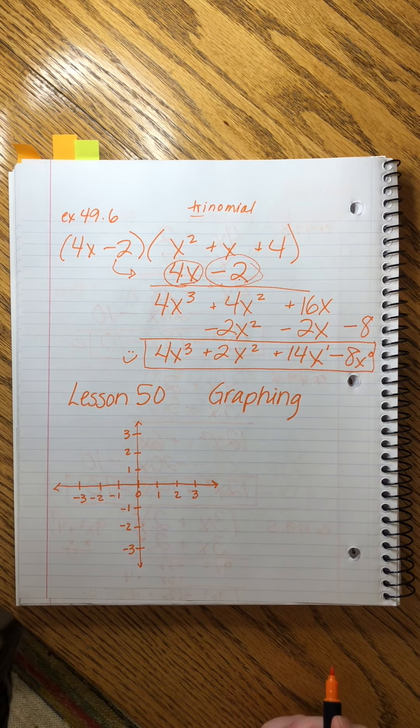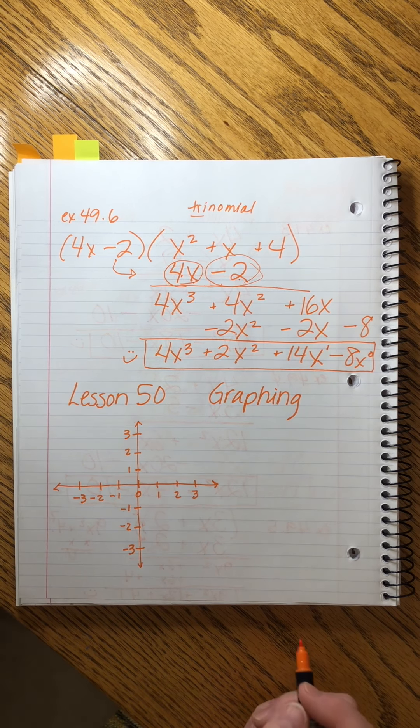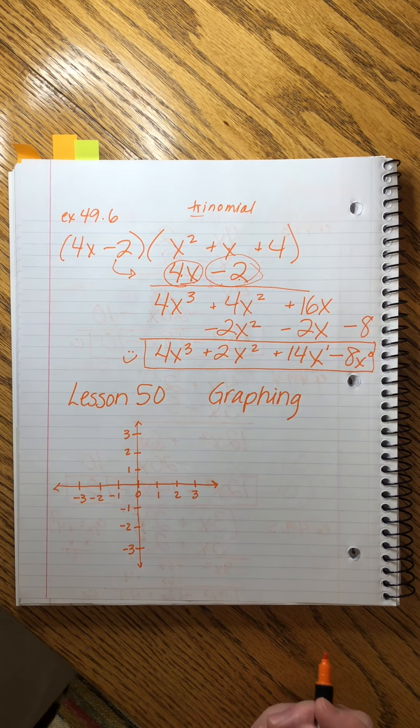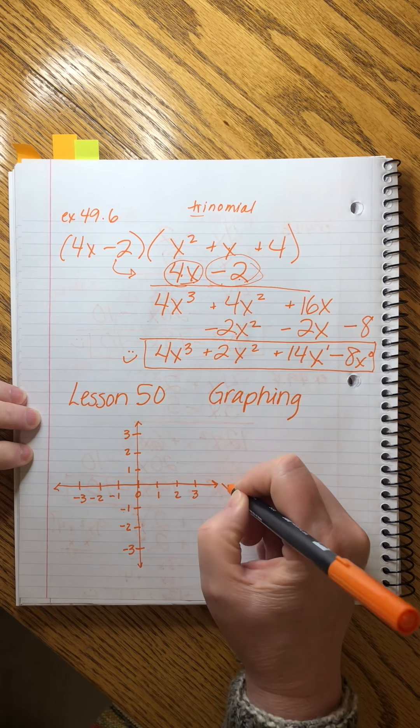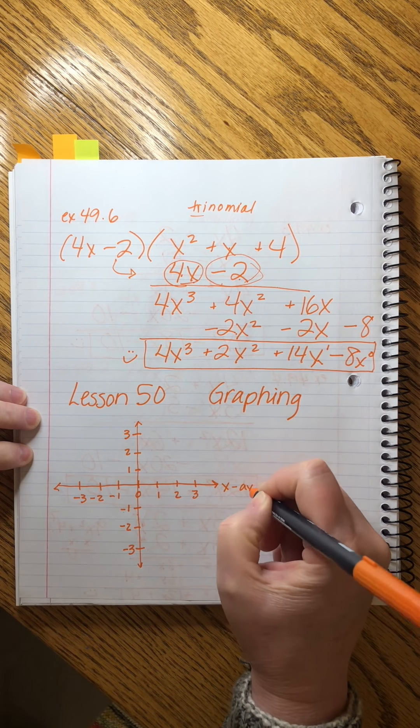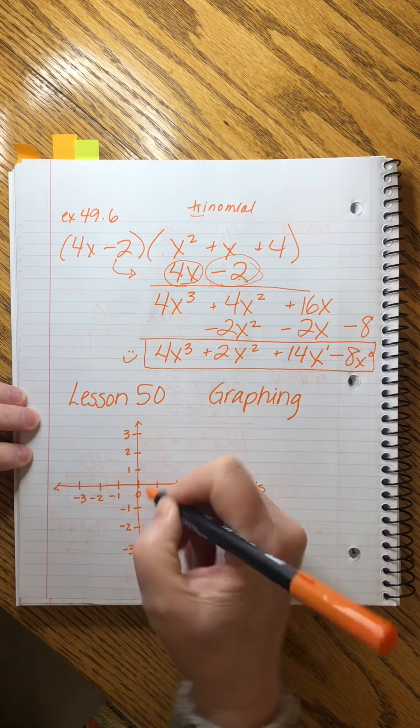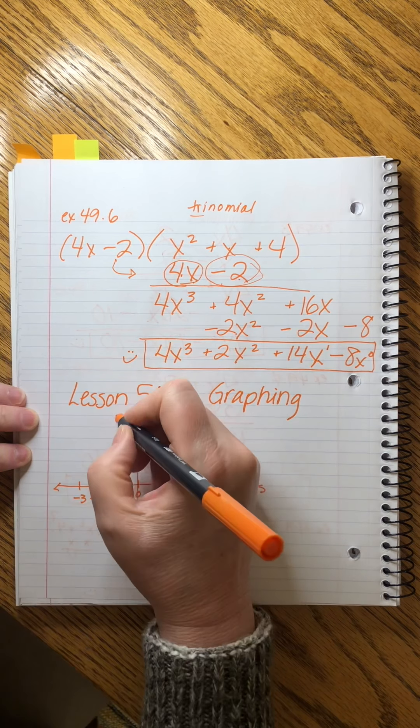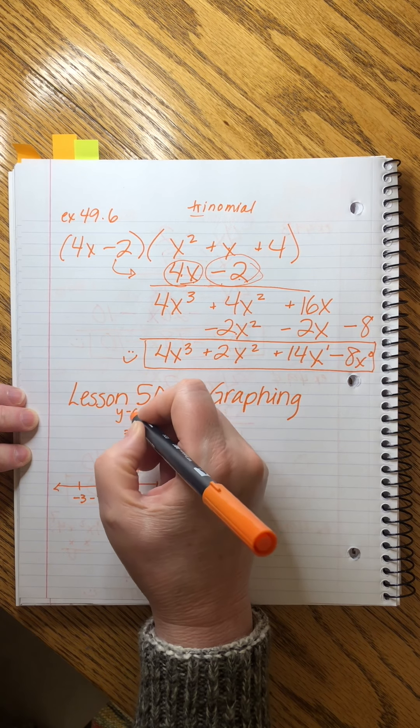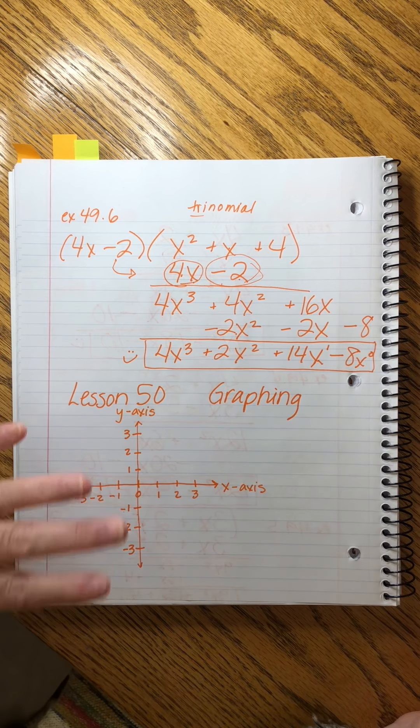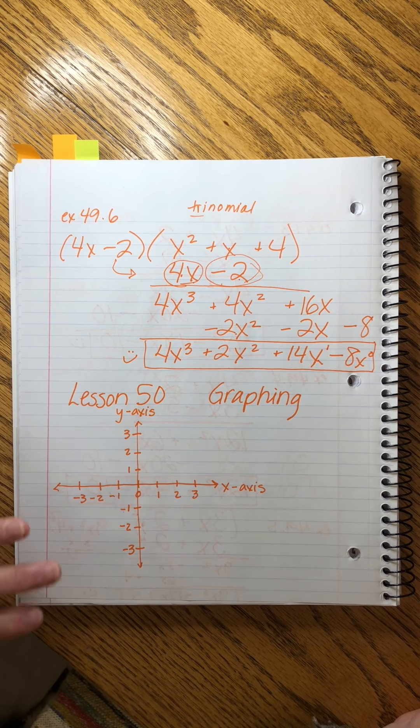This way, we can graph two locations at once. And the way we keep that all straight is we call this the x-axis, and we call this the original number line, and we call this one the y-axis. Make sure you are copying this all down as you go.